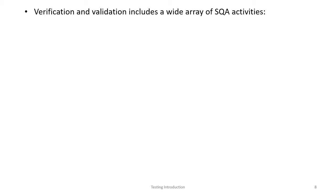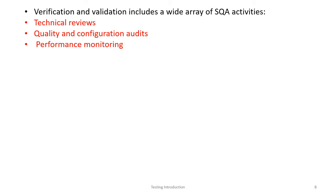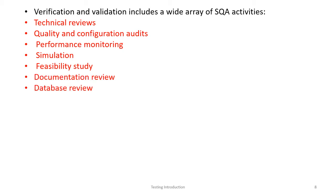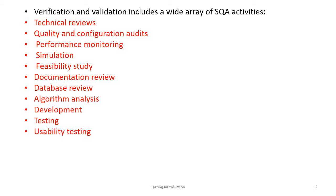The SQA activities include technical reviews, quality and configuration audits, performance monitoring, simulation, testing, feasibility study — technical feasibility, economical feasibility, and operational feasibility — documentation review, database review, algorithm analysis, complexity analysis, development stage validation, verification testing, and usability testing.